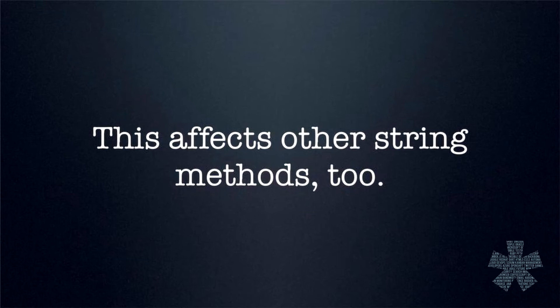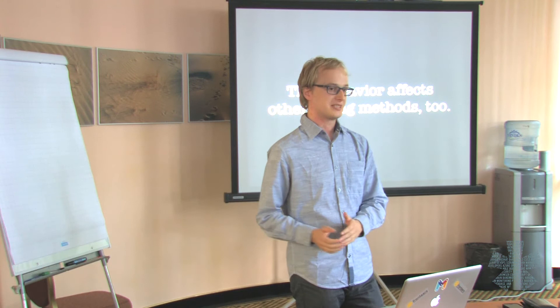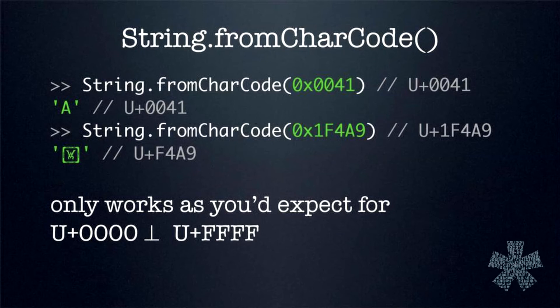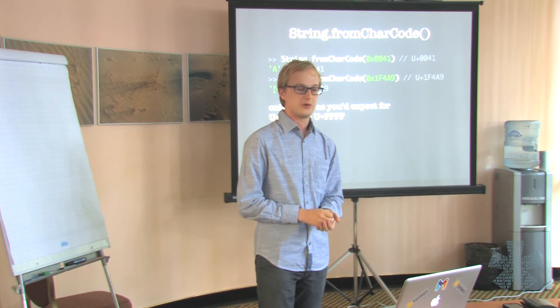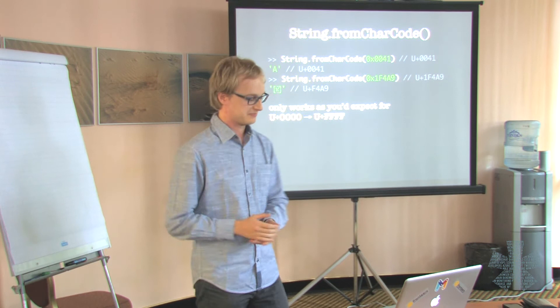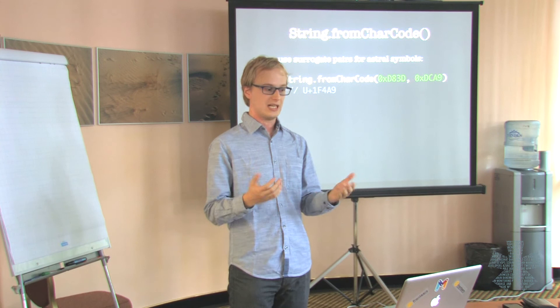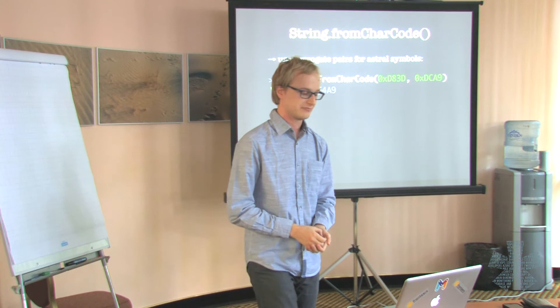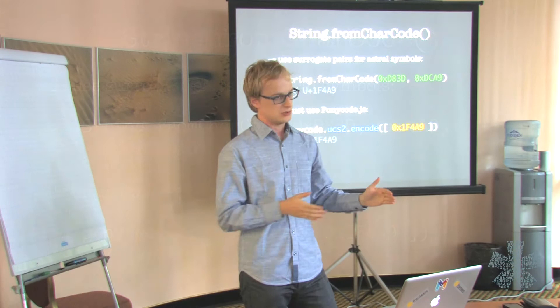This annoying behavior with surrogate pairs affects the entire language. For example, if you use string.fromCharCode to generate a string based on a code point, it only works correctly for BMP code points. As soon as you feed it a code point in the astral range, you will get a result, but it won't be the result you expect. The solution is to use surrogate pairs, but that's a huge pain because it means you have to calculate the surrogate halves separately yourself using those formulas. An alternative is to use a library like unicode.js, which accepts an array of code points and turns that array back into an original string of symbols.